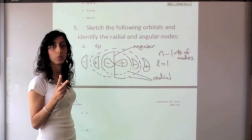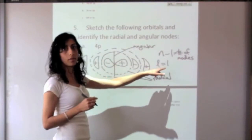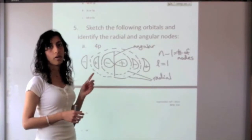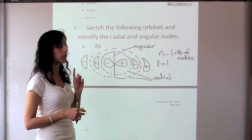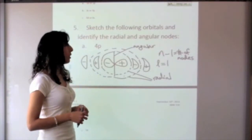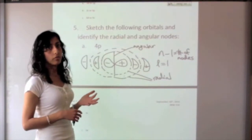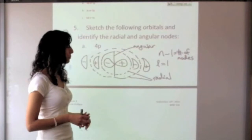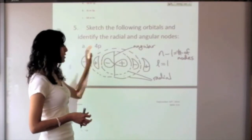So l also determines the number of angular nodes that we have. If we have a p orbital, we know that we have one angular node. And if we have an s orbital, we have zero angular nodes because the l for an s orbital is zero. So once again, this is a 4p.